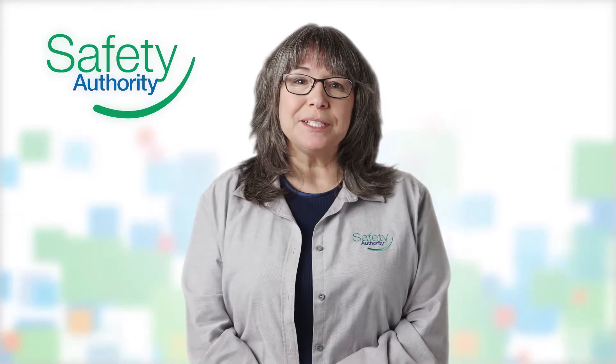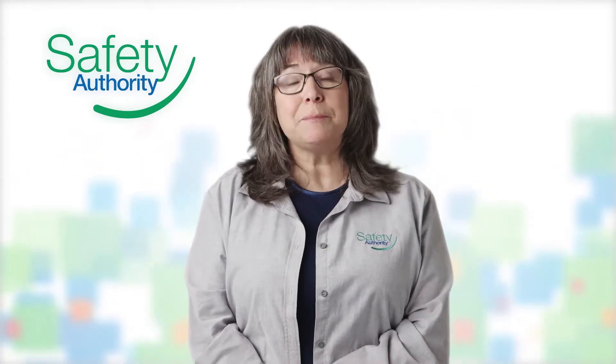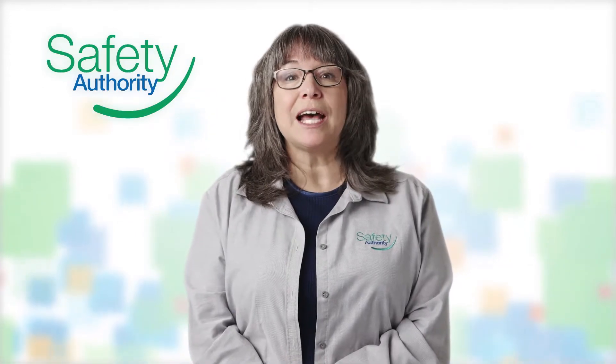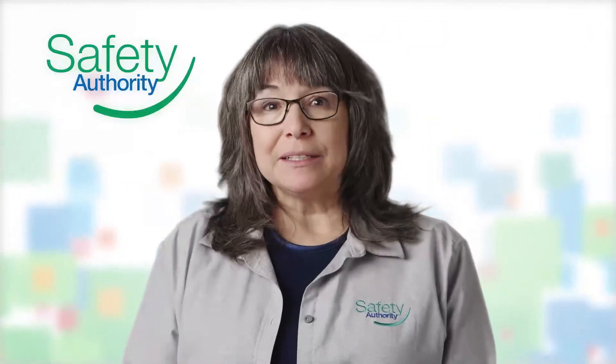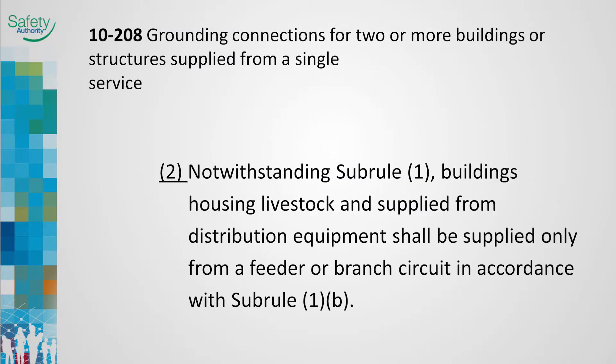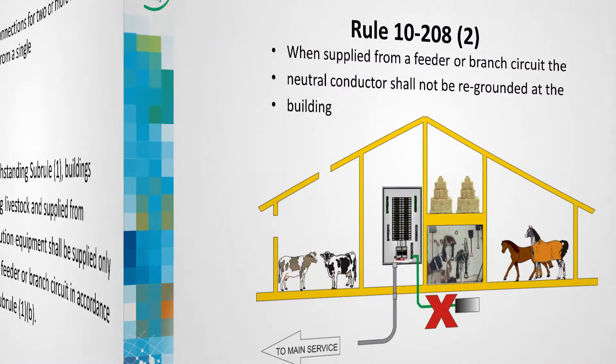Rule 10-208, sub-rule 2 is new and requires that buildings housing livestock have their neutral and bonding circuits isolated from each other. Grounding the neutral at a building is no longer permitted. This means barns and similar structures supplied from a distribution system located elsewhere on the property shall be supplied with a feeder incorporating a bonding conductor, and the neutral bonding screw shall be removed.